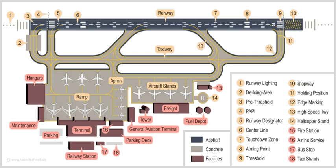An airport is an aerodrome with extended facilities, mostly for commercial air transport. Airports often have facilities to store and maintain aircraft, and a control tower. An airport consists of a landing area, which comprises an areally accessible open space including at least one operationally active surface such as a runway for a plane to take off or a helipad, and often includes adjacent utility buildings such as control towers, hangars and terminals.